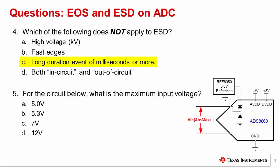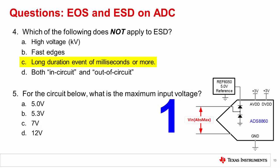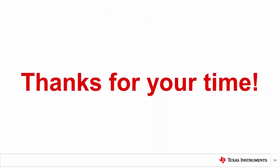For the circuit below, what is the maximum input voltage? The correct answer is B, 5.3 volts. This is the reference voltage plus the internal diode drop. Note that the 0.3 volts for the diode drop assumes process variations over temperature.